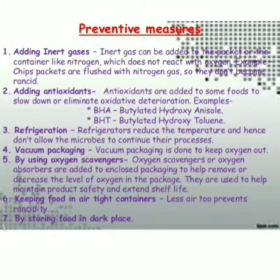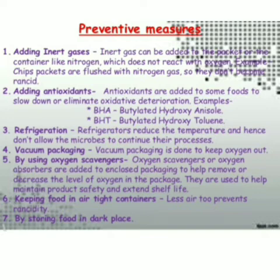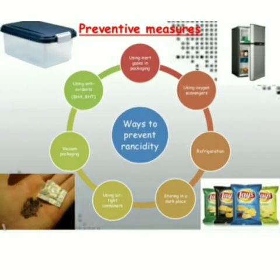Vacuum packing is very important as it removes oxygen from the container. Oxygen scavengers, also called oxygen absorbers, are added to packaging material to help remove or decrease the oxygen level, which keeps the product safe and extends its shelf life. Keeping food in airtight containers reduces the chances of rancidity. And storing food in dark places is also an effective preventive measure.